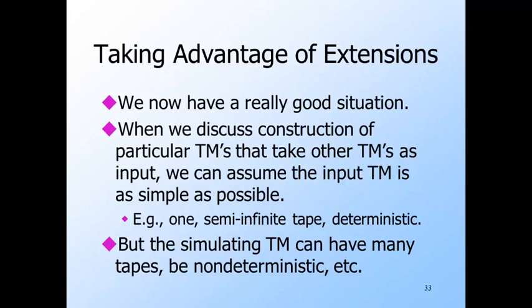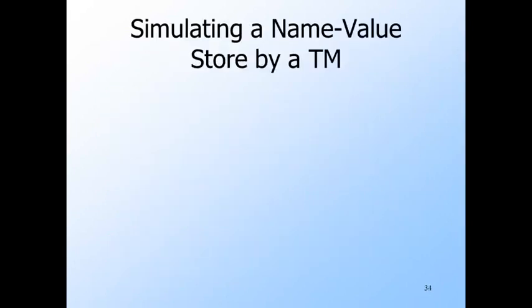All the constructions we just showed will turn out to be quite useful in the future. When we do important constructions involving Turing machines, we'll assume the input Turing machine is as simple as possible — a deterministic machine with one tape, infinite only to the right. However, when we do the simulation, we're free to use a Turing machine that is as powerful as we need — in particular, we can allow it to be non-deterministic and to have as many tapes as we need.